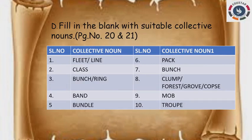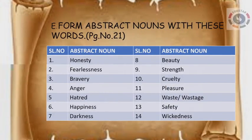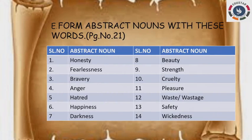The next exercise is D: fill in the blanks with suitable collective nouns, given on pages 20 and 21. Collective nouns are a name given to a group of persons, animals, or things. I have given the answers for around 10 questions — check them out. Exercise E is: form abstract nouns with these words, given on page 21. For example, the word 'honest' is given — write the abstract noun form. I have provided the answers — write them accordingly.